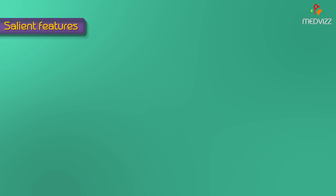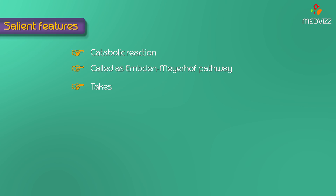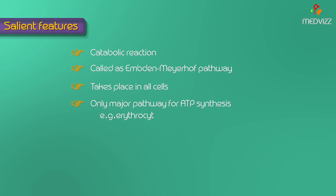The salient features of Glycolysis: it is a catabolic reaction, also called the Embden-Meyerhof pathway. It is the only pathway that takes place in all the cells of the body, and it is the only major pathway for ATP synthesis in tissues lacking mitochondria — for example, erythrocytes, cornea, and lens. Glycolysis is a central metabolic pathway which produces different intermediates or substrates useful for the synthesis of amino acids as well as fat.